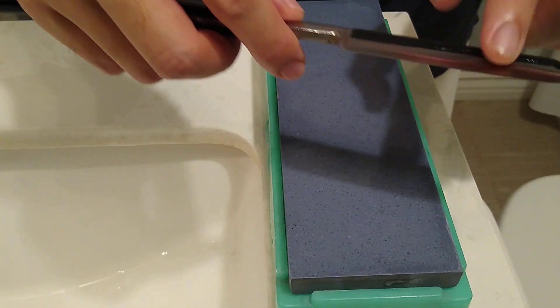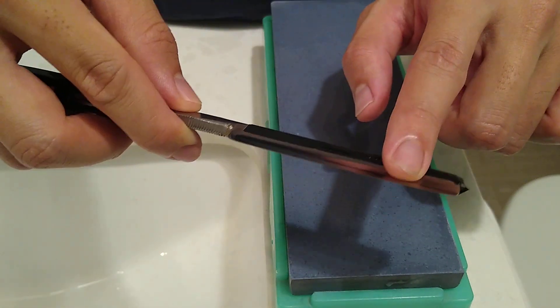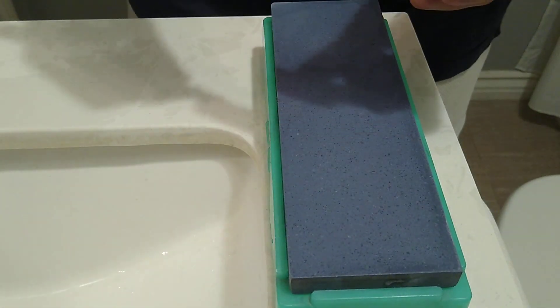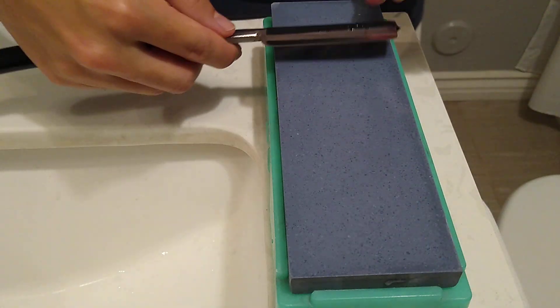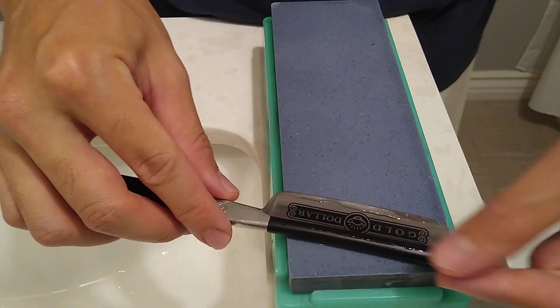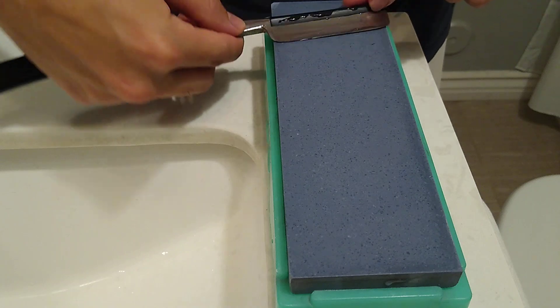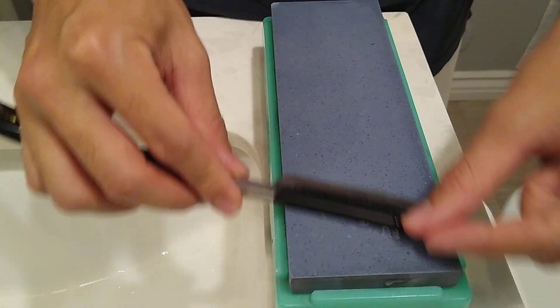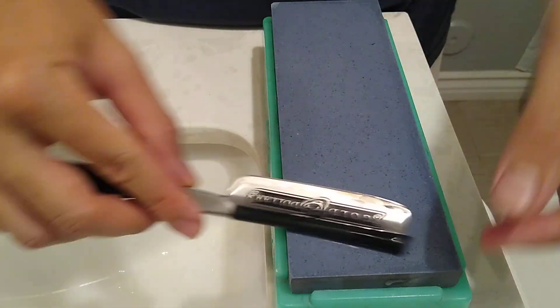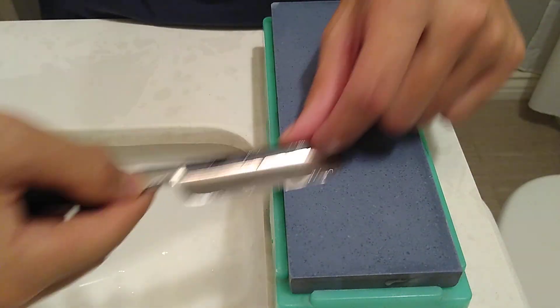Rest of the edge is fine. Just this one part over here is not cutting hair. So I gotta get it back to shape. What I'm gonna do, I have two layers of tape here, just gonna do some back and forth and X strokes and some rolling X strokes.